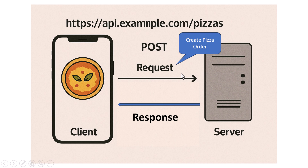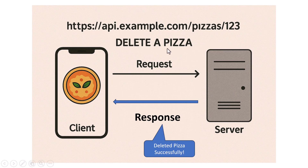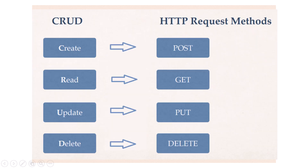The second is POST, which means send new data — this is what happens when you place an order in the delivery app. The third is PUT, which is used when you want to update something; for instance, you might want to change the delivery address after placing the order. The fourth is DELETE, which is used to remove something — you might use this to cancel your order.